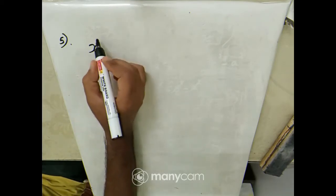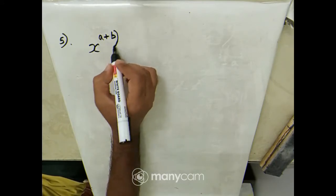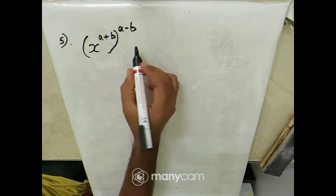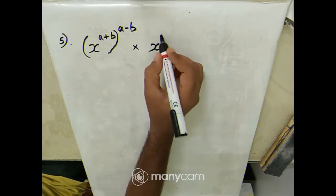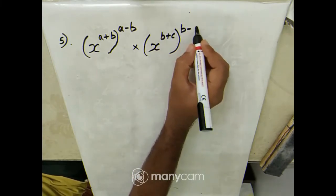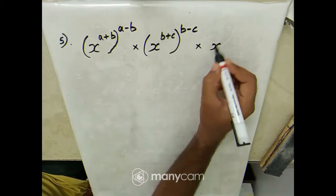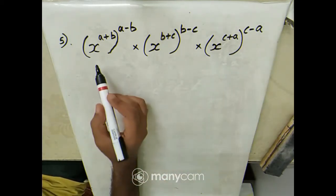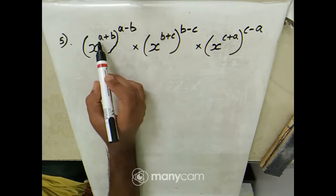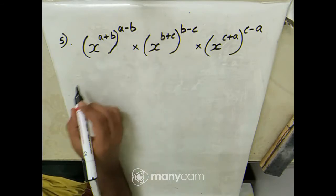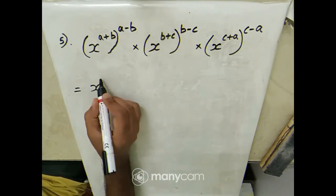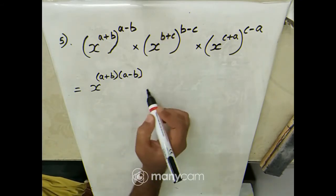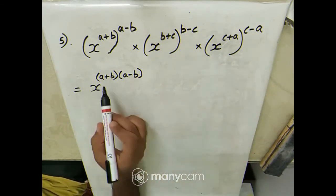The question is: x power (a+b), raised to (a-b), multiplied by x power (b+c), raised to (b-c), multiplied by x power (c+a), raised to (c-a). I can multiply the exponents: (a+b)(a-b), (b+c)(b-c), and (c+a)(c-a), giving x^[(a+b)(a-b)] × x^[(b+c)(b-c)] × x^[(c+a)(c-a)].